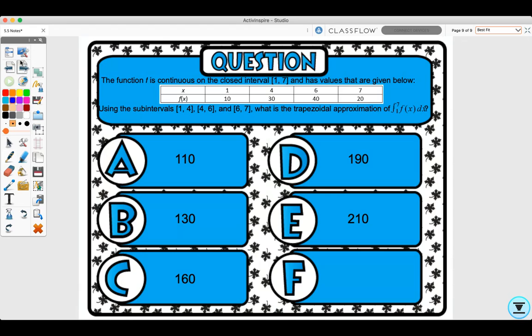Let's look at our quick quiz. The function f is continuous on the closed interval 1 to 7 and has values that are given below. Using subintervals 1 to 4, 4 to 6, and 6 to 7, what is the trapezoidal approximation of this function? Go ahead and pause the video and try to do this on your own.